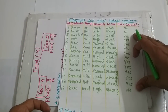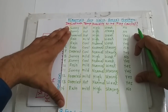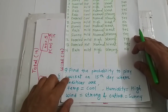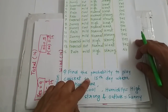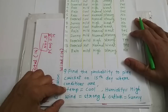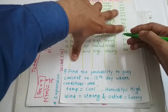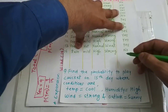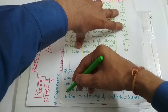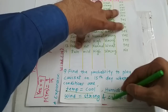Now you have been asked a question. To understand Naive Bayes theorem, we will try to solve one question based on this particular data of 14 days. The question is: given this data for 14 days, find the probability to play cricket on the 15th day, where the conditions are — temperature is cool, humidity high, wind strong, outlook is sunny. That means, given this data for 14 days, we need to find out whether to play cricket on the 15th day given that temperature is cool, humidity is high, wind is strong, and outlook is sunny.